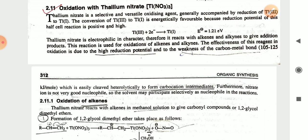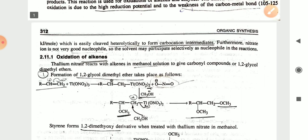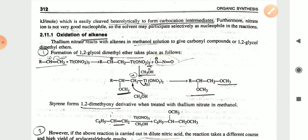This reaction is used for the oxidation of alkenes and alkynes. The effectiveness of this reagent in oxidation is due to its high reduction potential and the weakness of the carbon-carbon metal bond, which is easily cleaved via heterolytic cleavage forming carbocation intermediates.